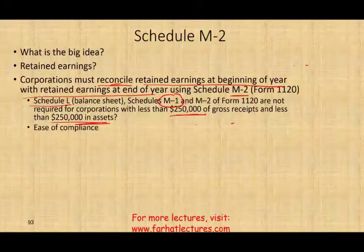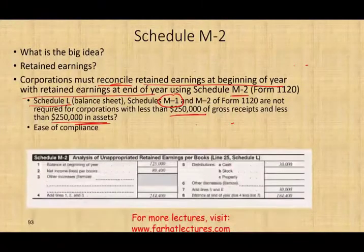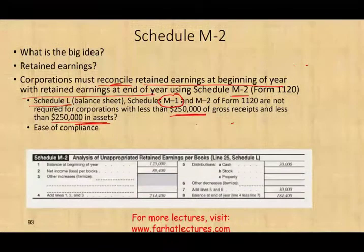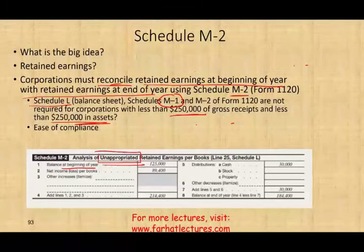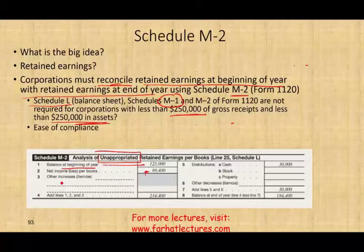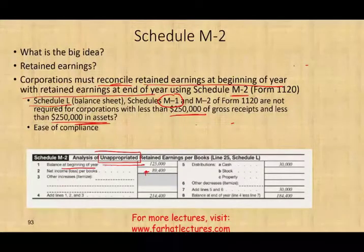For ease of compliance, if you are considered a small company, you don't have to worry about this. And this is what Schedule M2 looks like — it's your balance at the beginning of the year, and they call it 'Analysis of Unappropriated,' meaning unrestricted retained earnings. For this company, $125,000 plus net income gave them $214,400. You could have other increases if there are any adjustments.